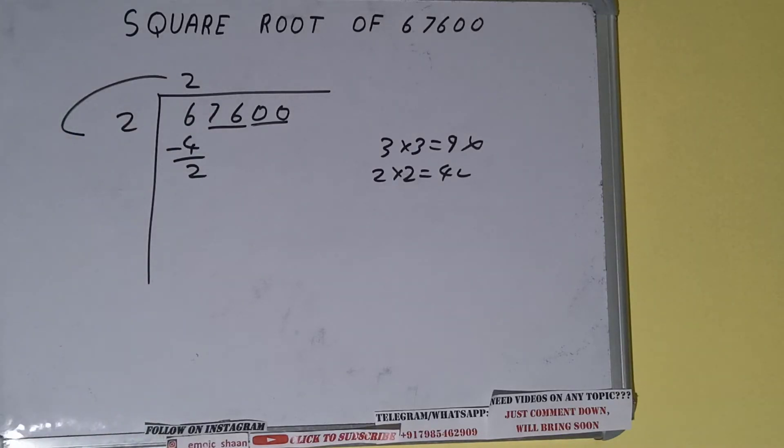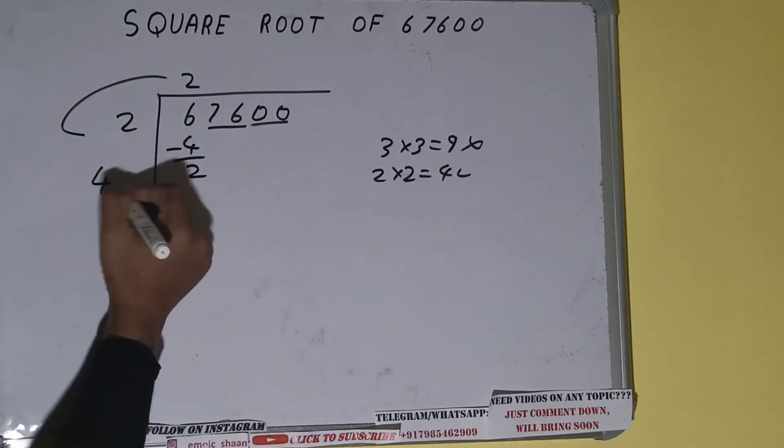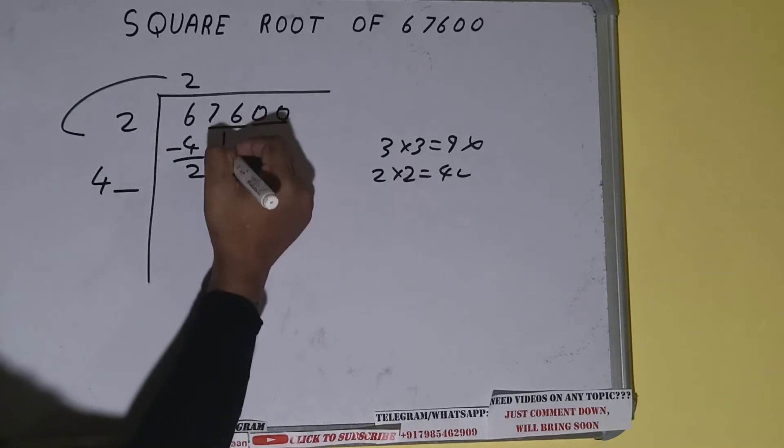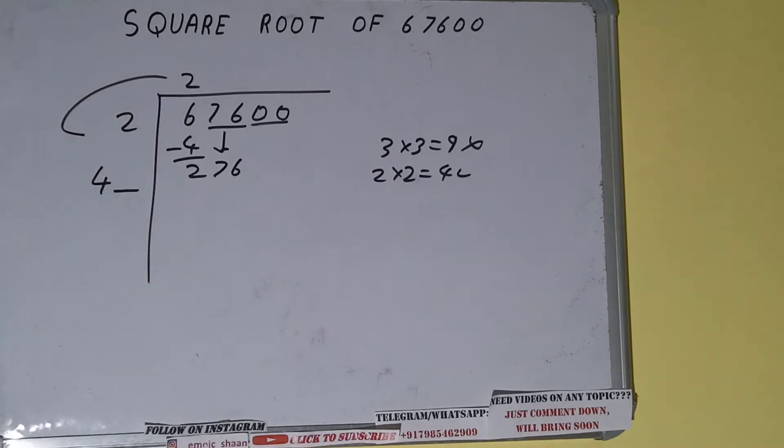We did two into two, so add both. So two plus two will be four. Write it here and keep one digit extra, and this number we need to make it big. So bring the next pair down and it will become 276.